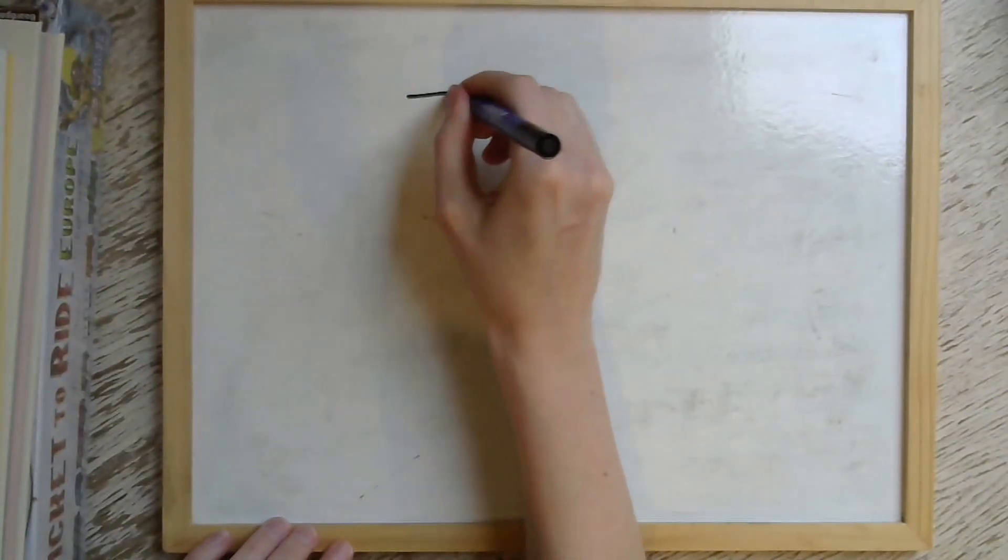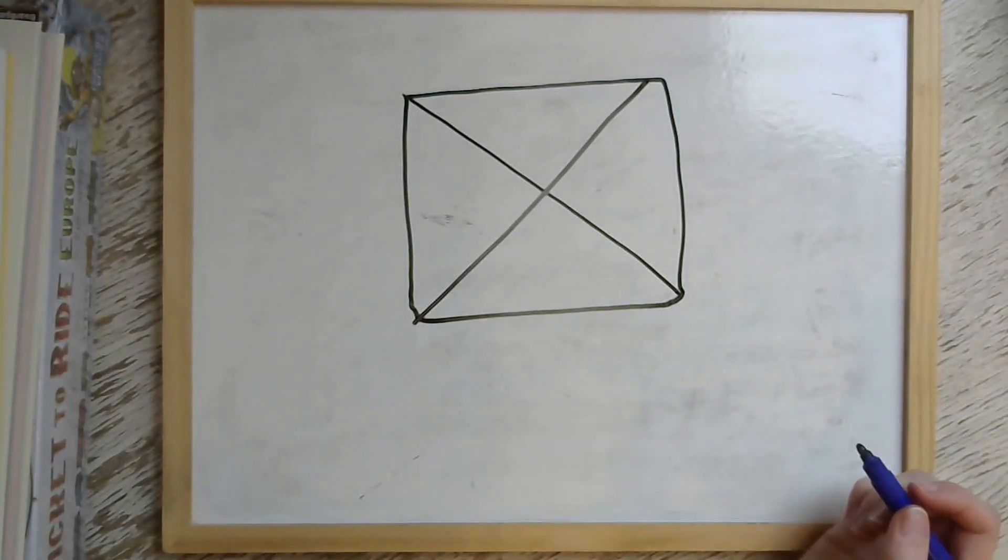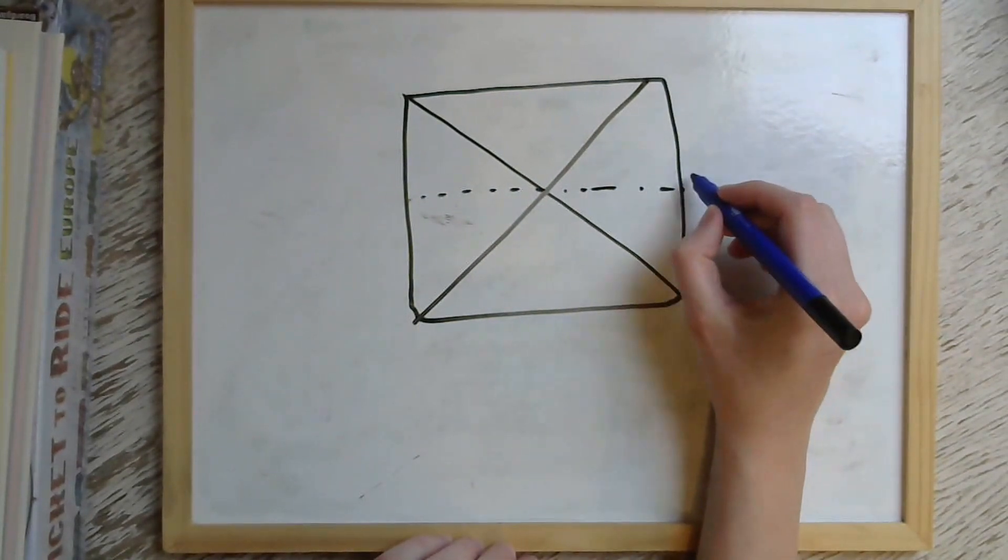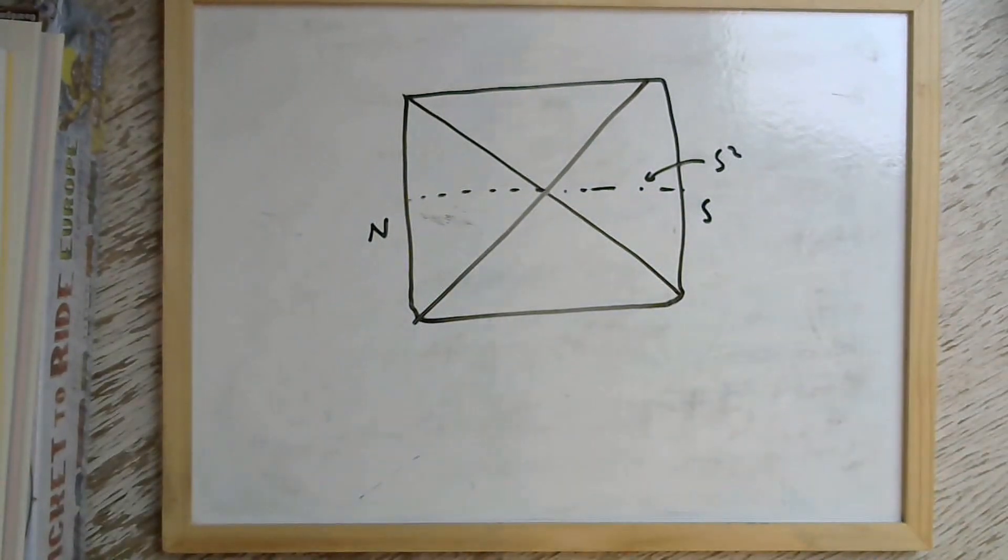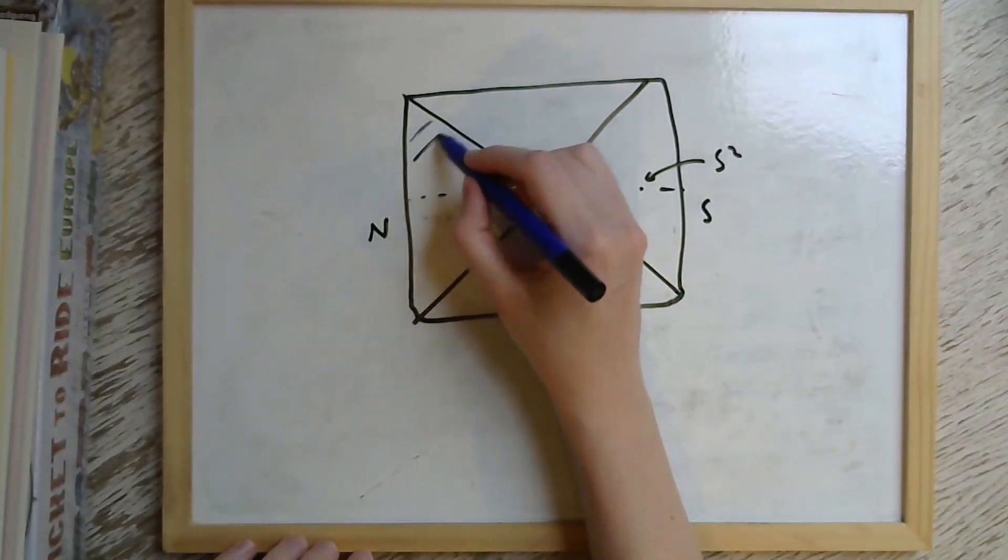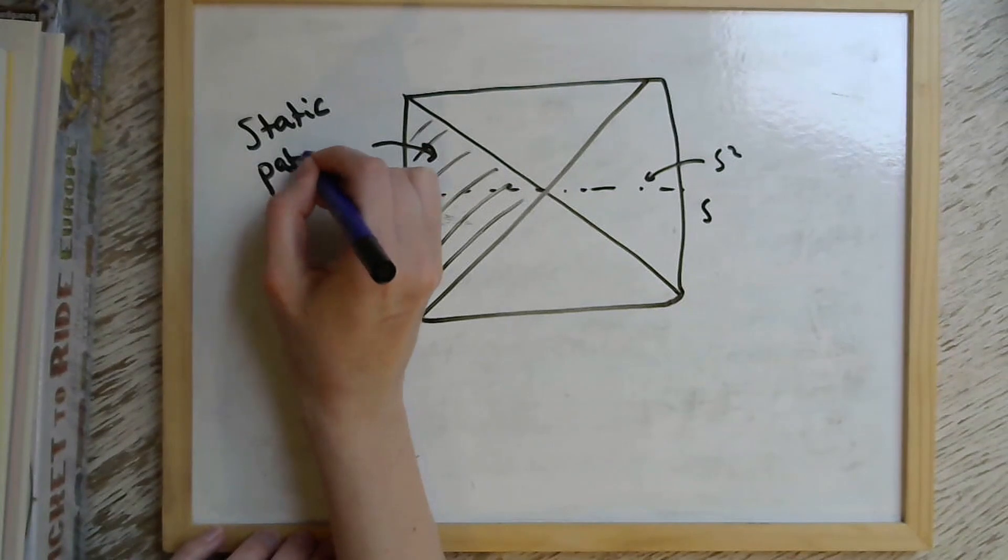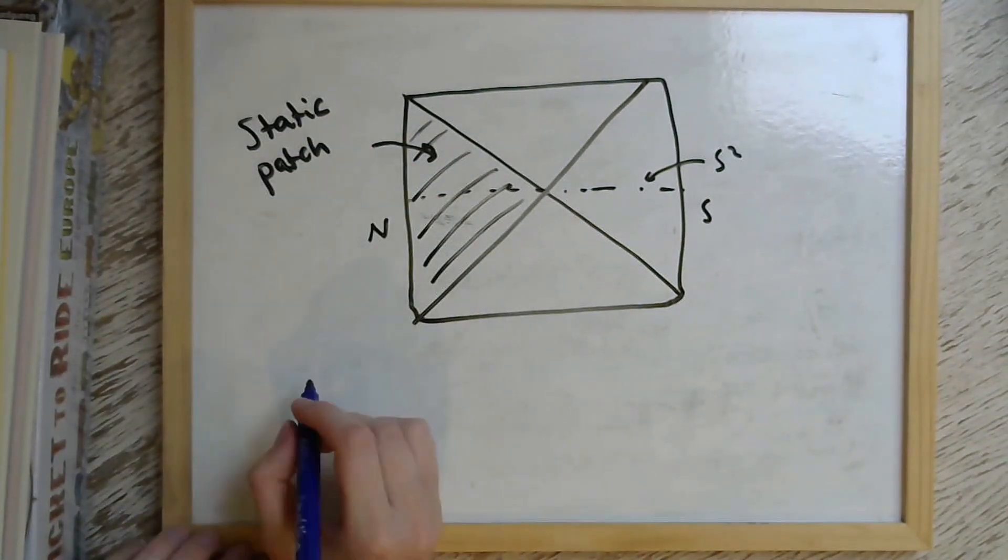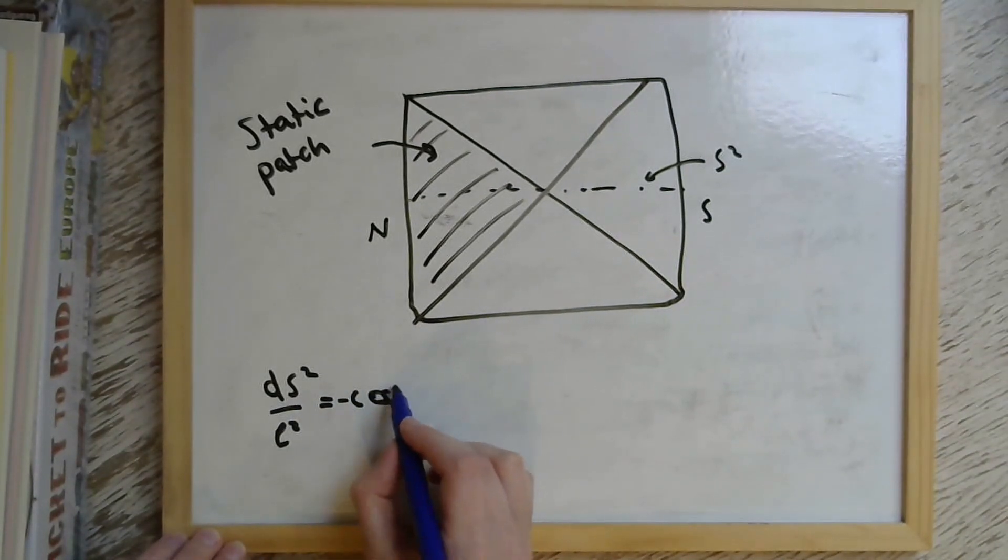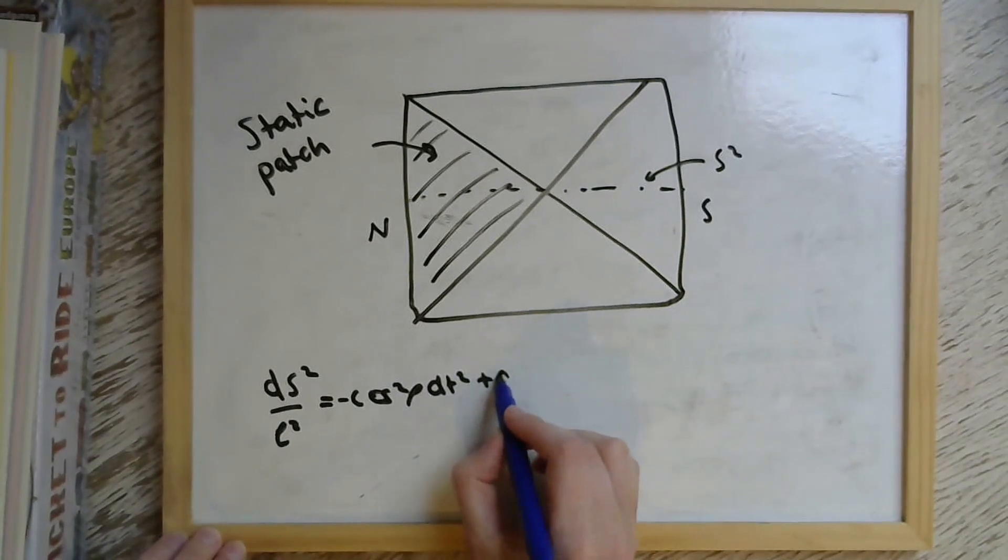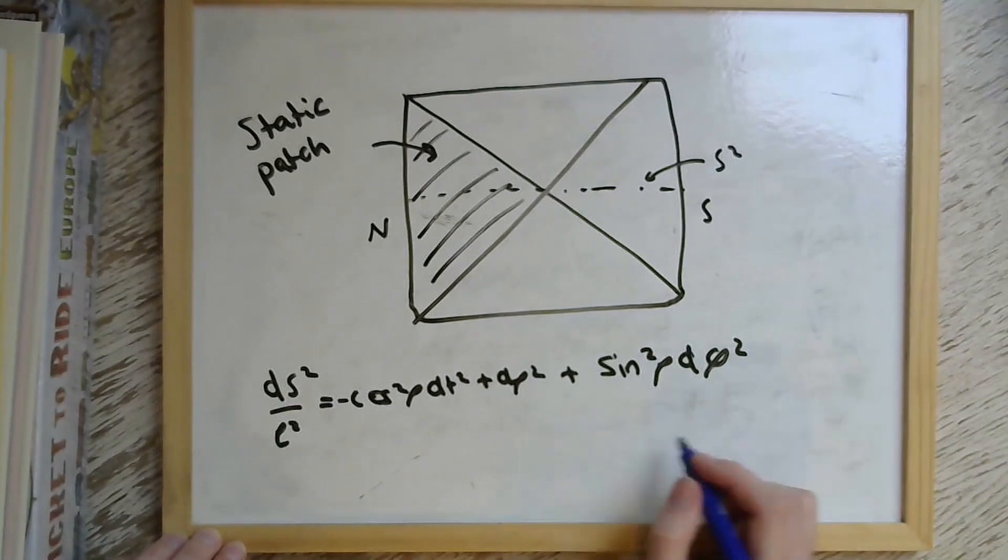The Penrose diagram of de Sitter is a square that looks like this. And as we just noted, constant time slices in this space are two spheres. So the left and right hand side of this Penrose diagram are not actually boundaries of the space. They're really poles of the two sphere. And we can focus on one specific coordinate patch of de Sitter, which is this one here. And it's called the static patch. And it has a metric which is described like this. It's the metric that's associated to an inertial observer that sits at one of the poles of the two sphere. And this observer will always see a horizon in the space, as we can see from the Penrose diagram, at the place where this coordinate ρ equals π/2.